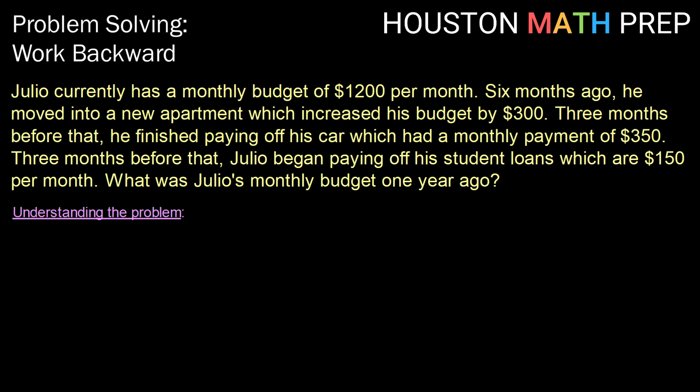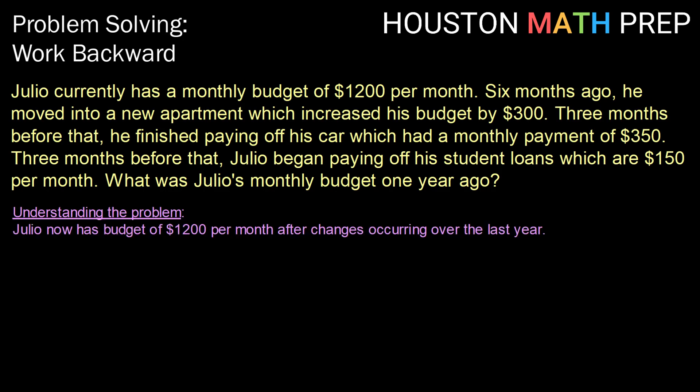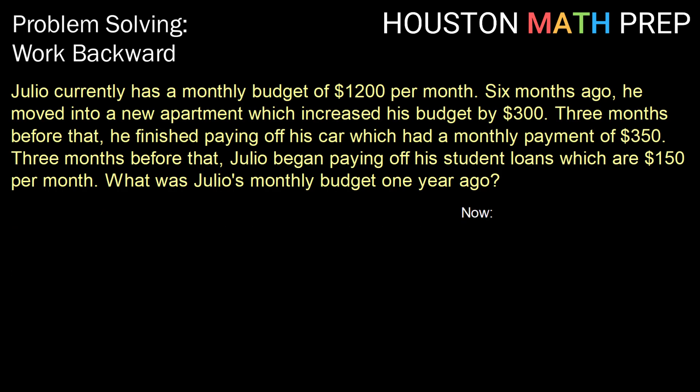So we're going to start by making sure that we understand the problem. We know that Julio now has a budget of $1,200 per month after some changes occurring over the last year. When we go to devise a plan, working backwards would seem appropriate here, starting with what we know is current with Julio and working backwards with the changes that occurred for him. So let's start with what we know about now — Julio's budget right now is $1,200.